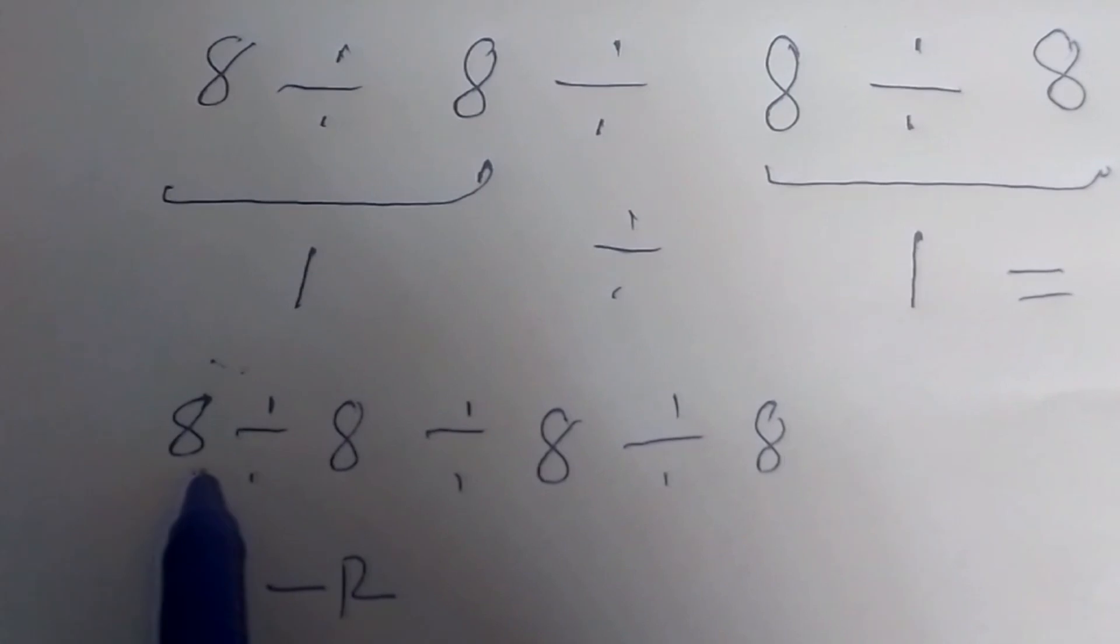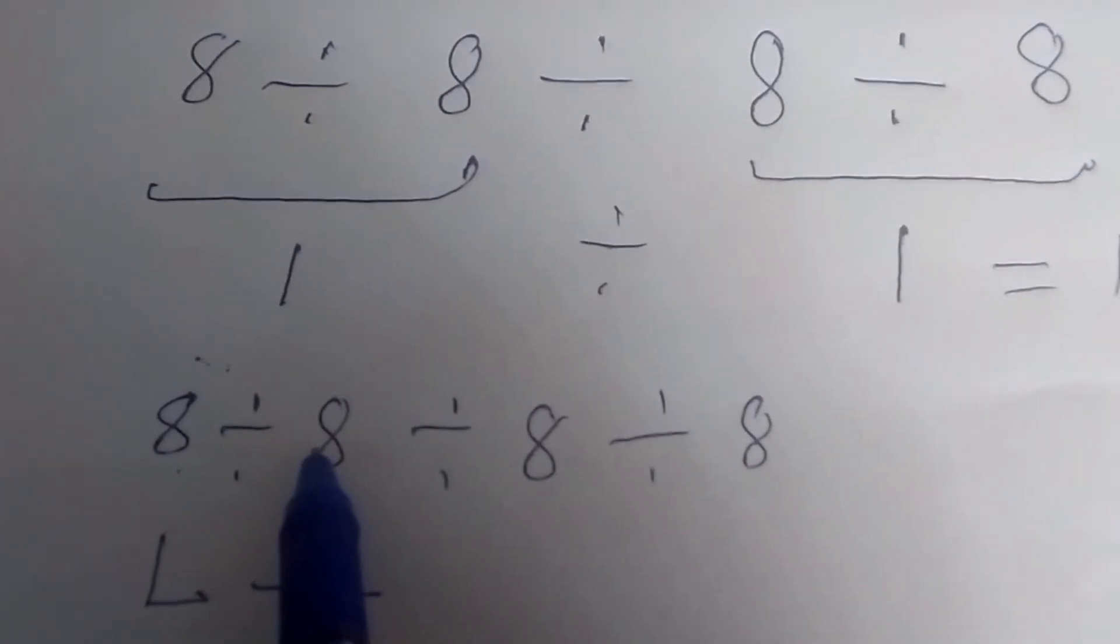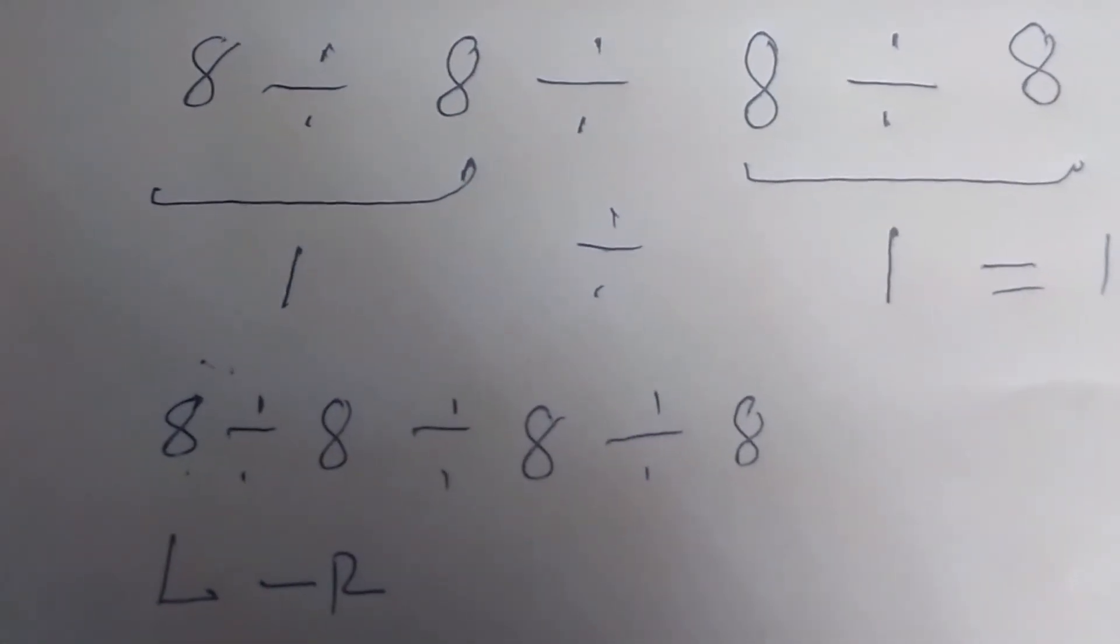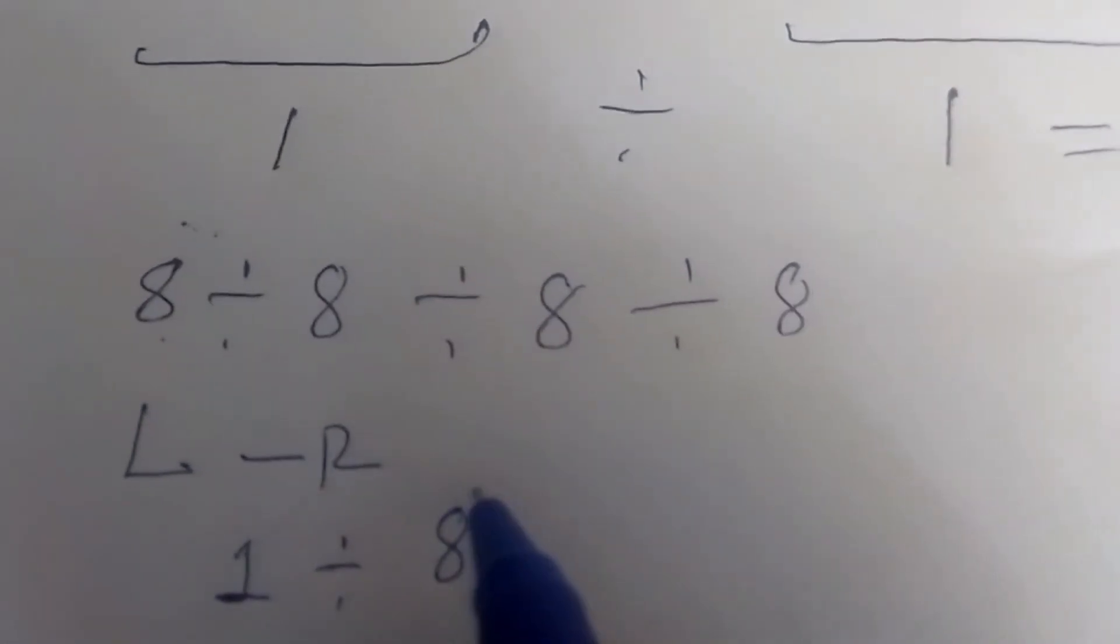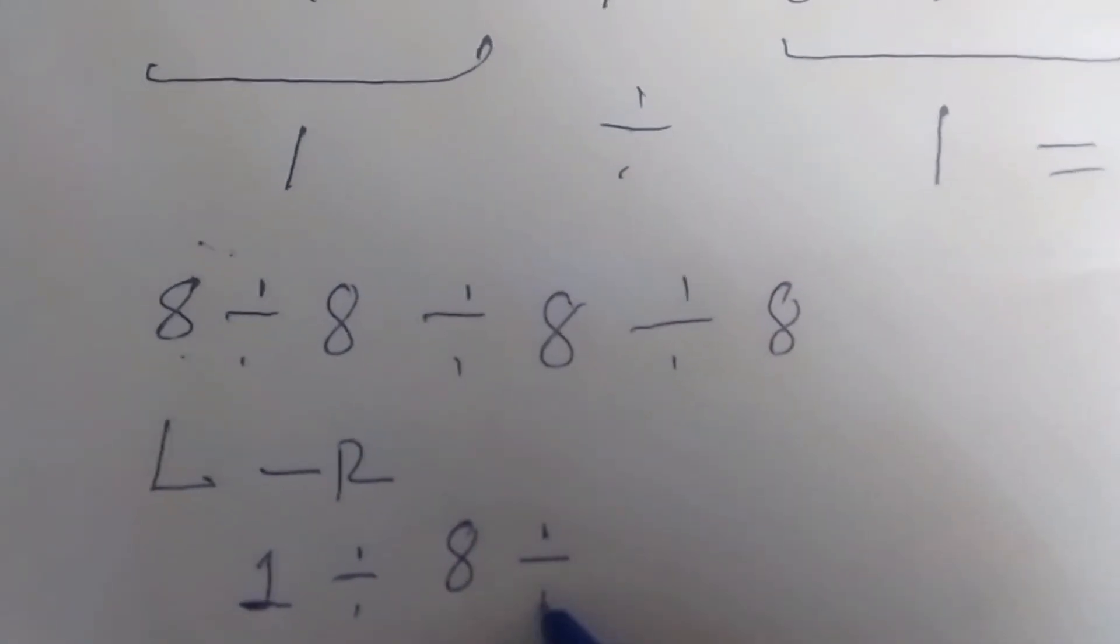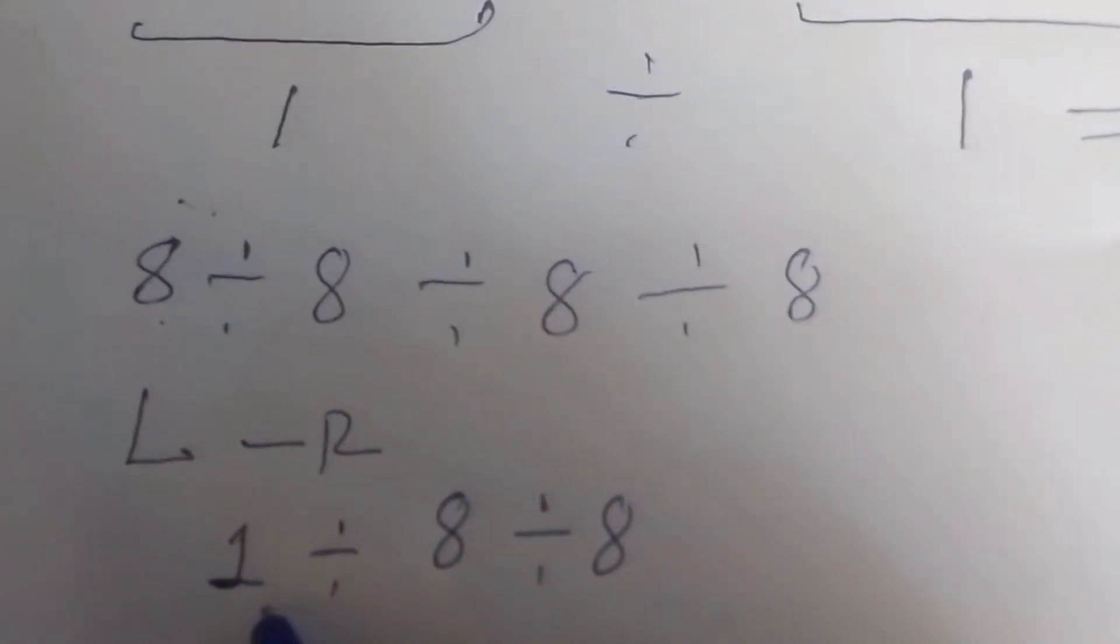This one: 8 divided by 8 is 1. 1 divided by 8 divided by 8, and then 1 divided by 8.